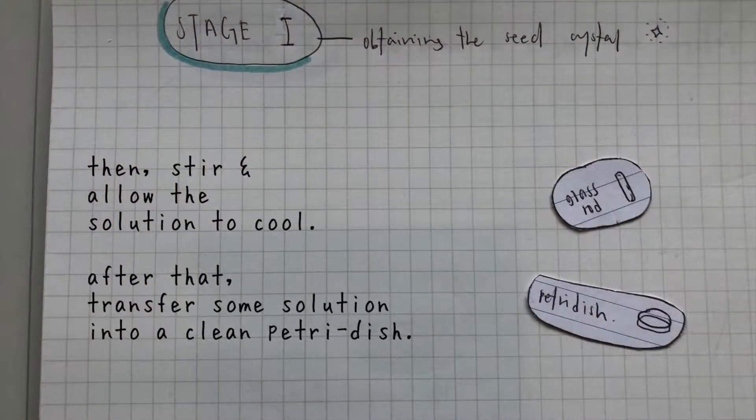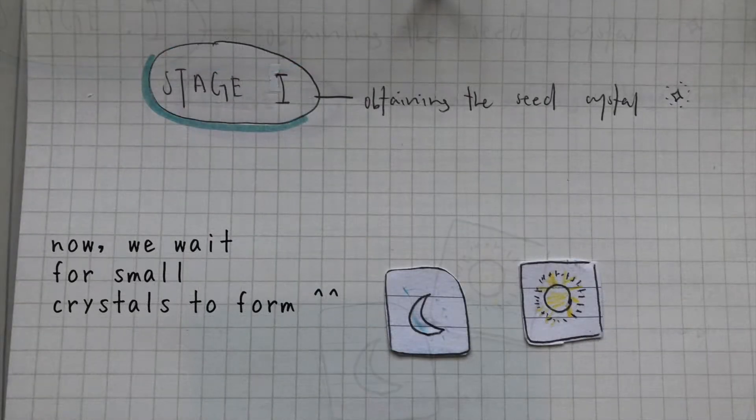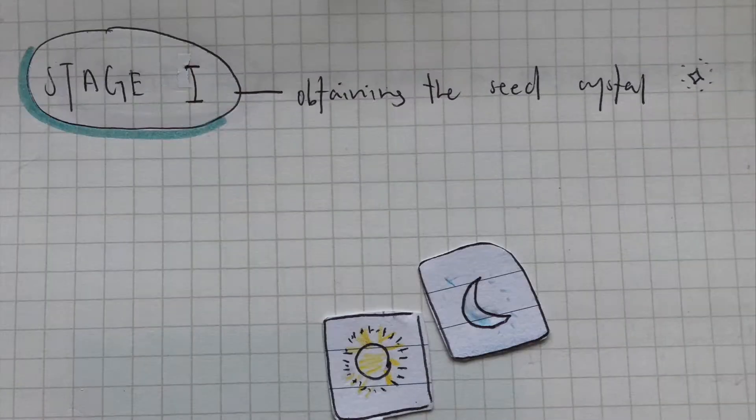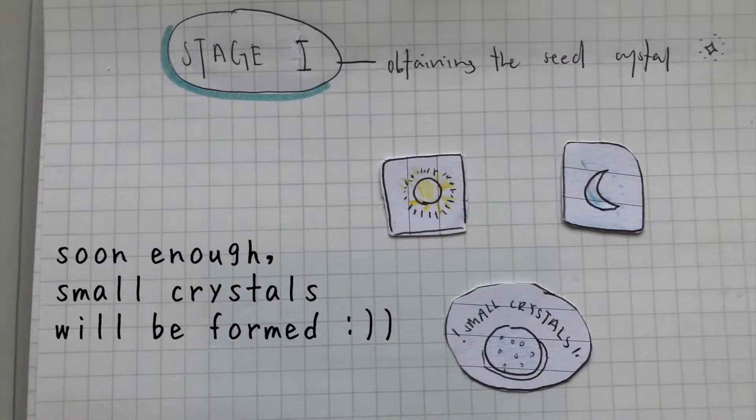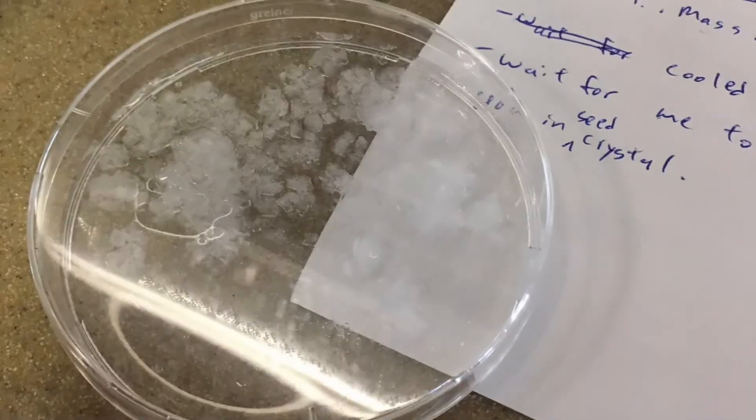Then, we stirred and allowed the solution to cool. After that, we transferred some of the solution into a clean petri dish to allow seed crystals to form. We let the solution rest overnight undisturbed and when we came back to check on it the next day, there were many small crystals that had been formed in the petri dish.